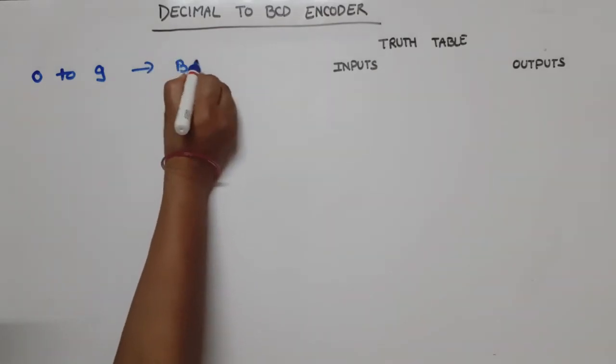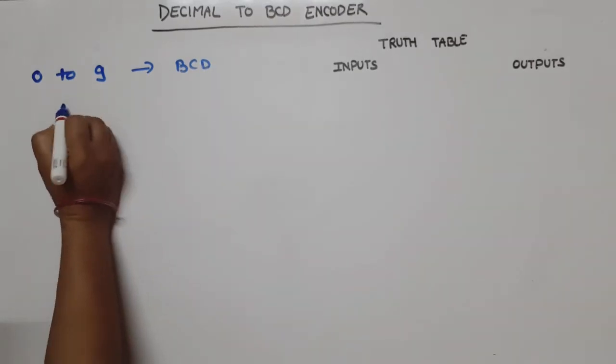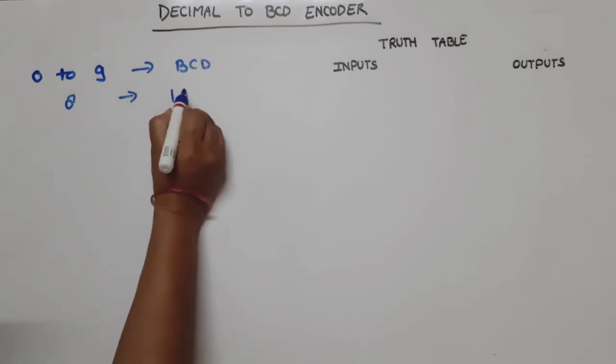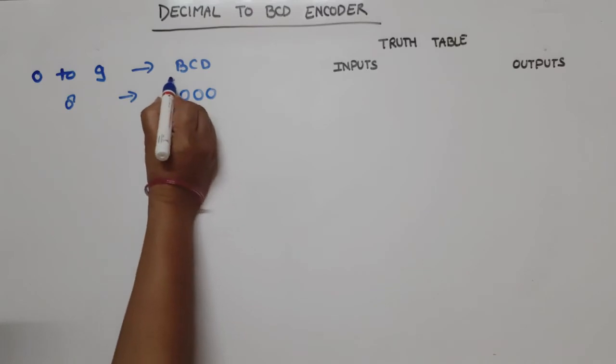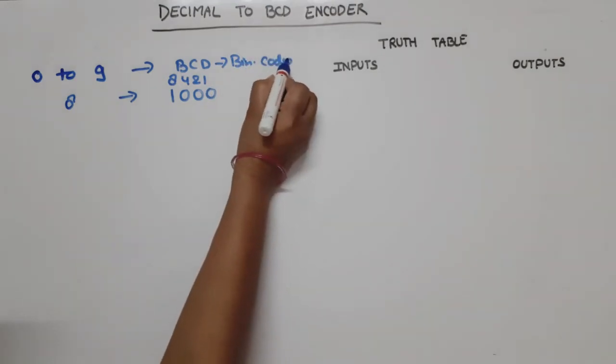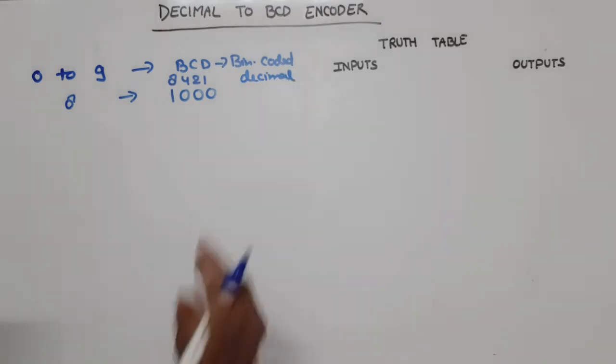These zero to nine numbers we will represent in BCD, and in BCD we represent every number by four bits. For example, if we write eight in decimal, it can be represented by 1000. BCD weight is 8-4-2-1, and BCD is called binary coded decimal, means decimal number we represent in binary.